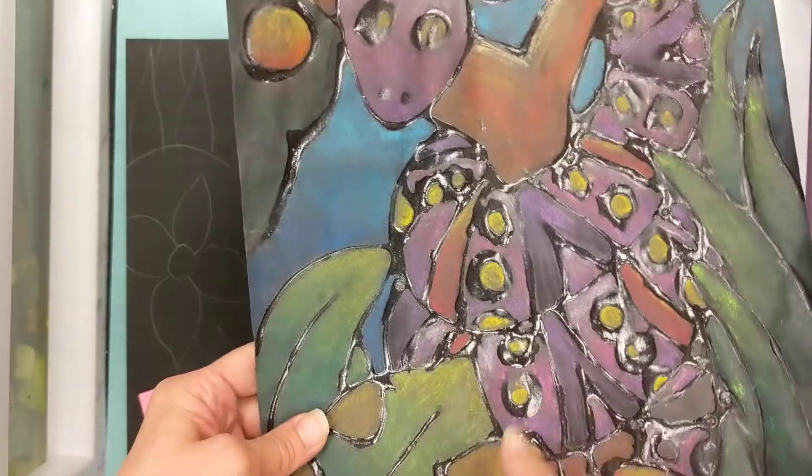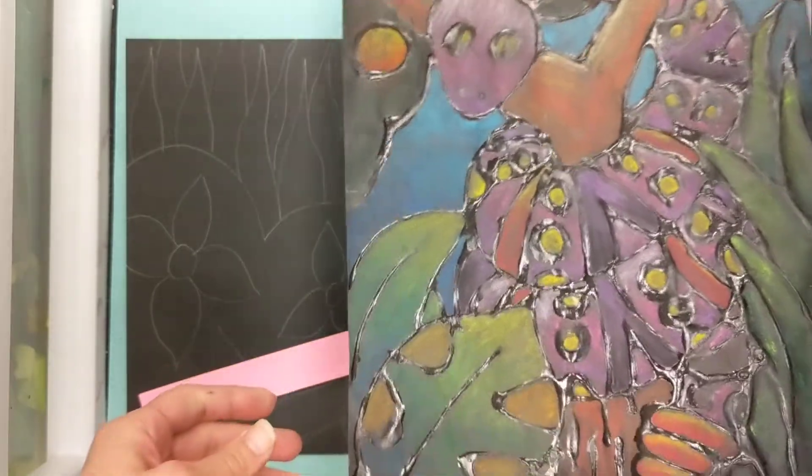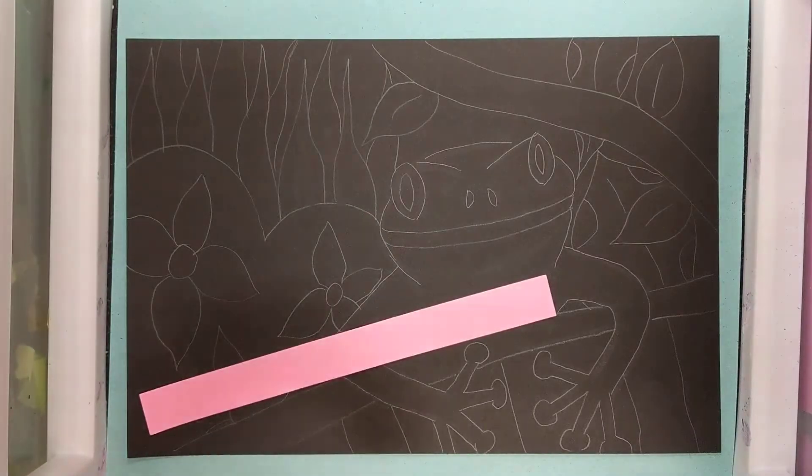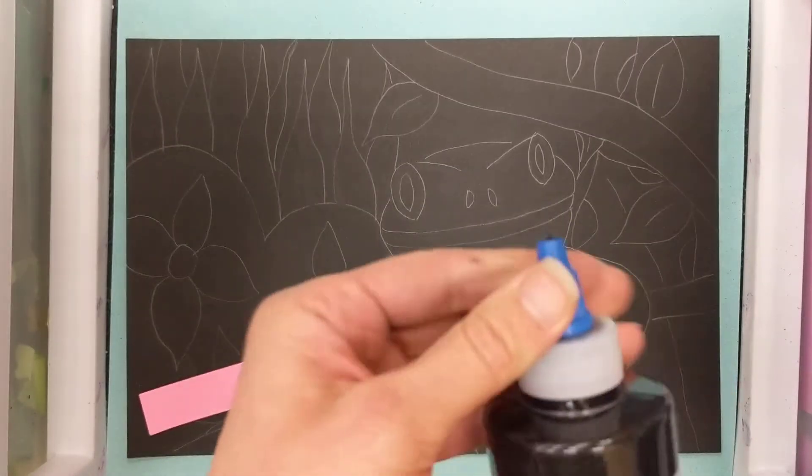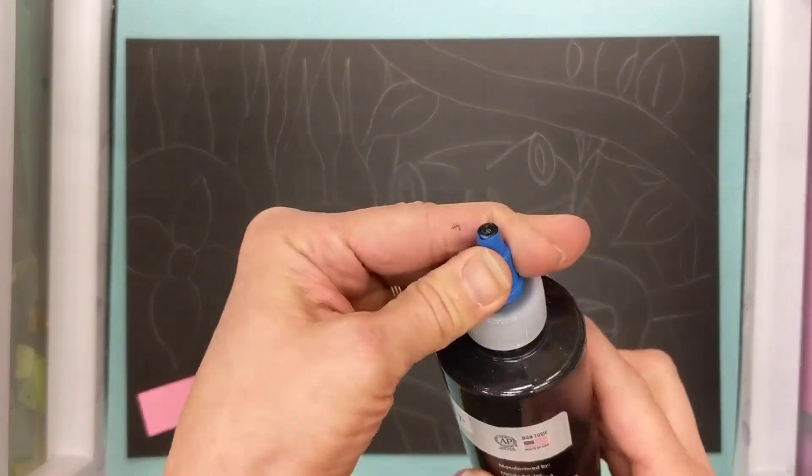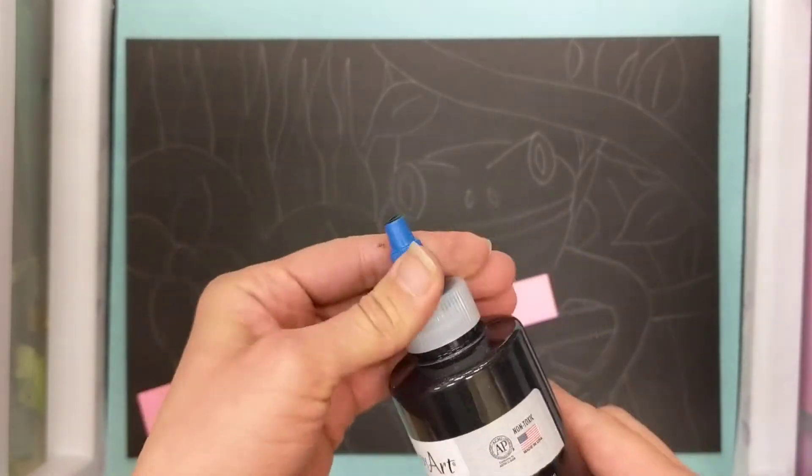You can see everywhere where there was pencil lines, I filled in with black glue. First thing you want to do when you get your black glue, make sure that it is opened. Just like regular glue, you got to turn it to open it.